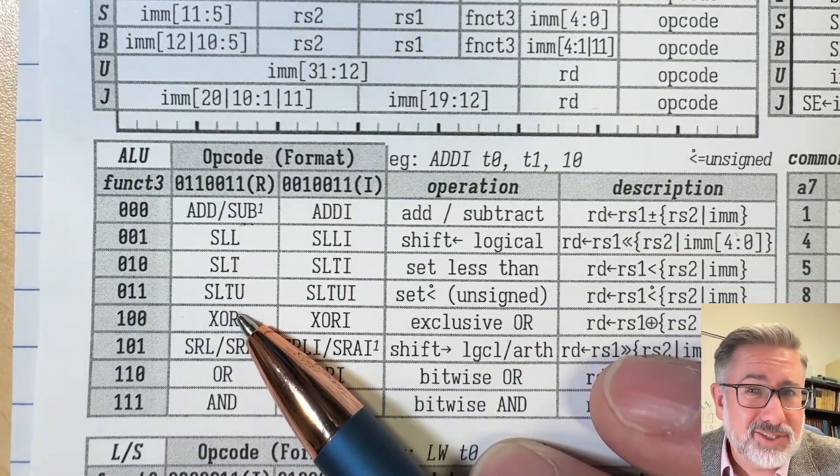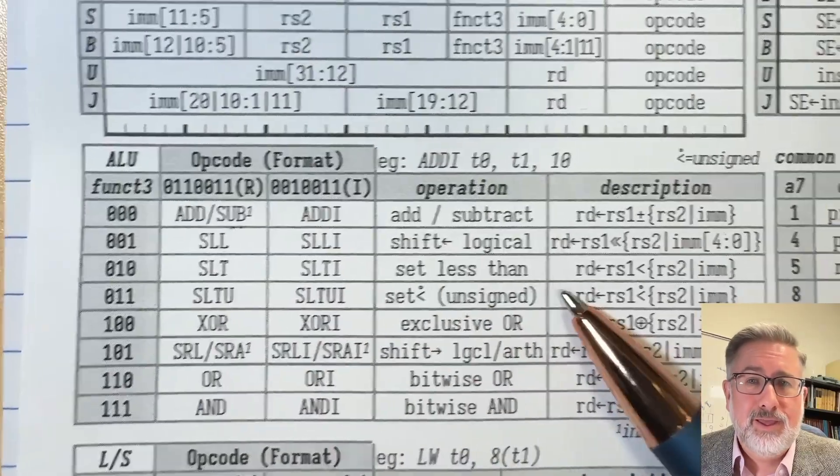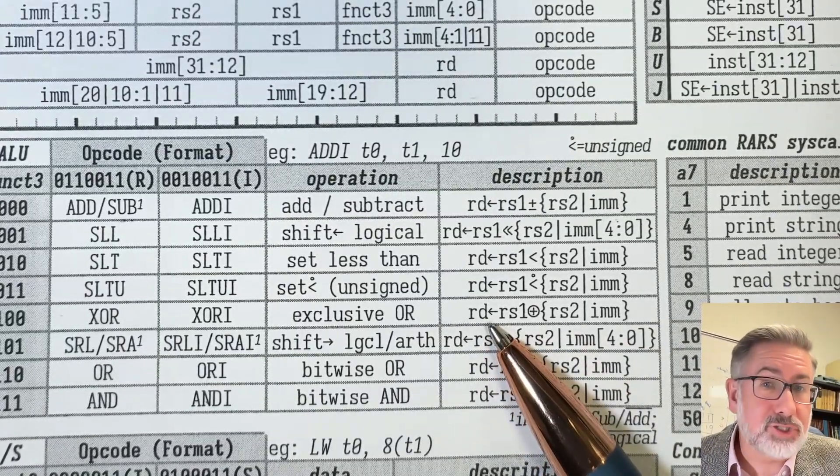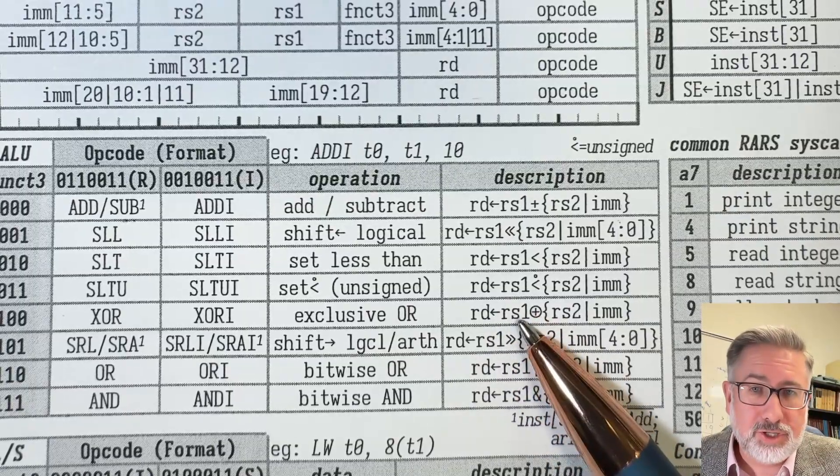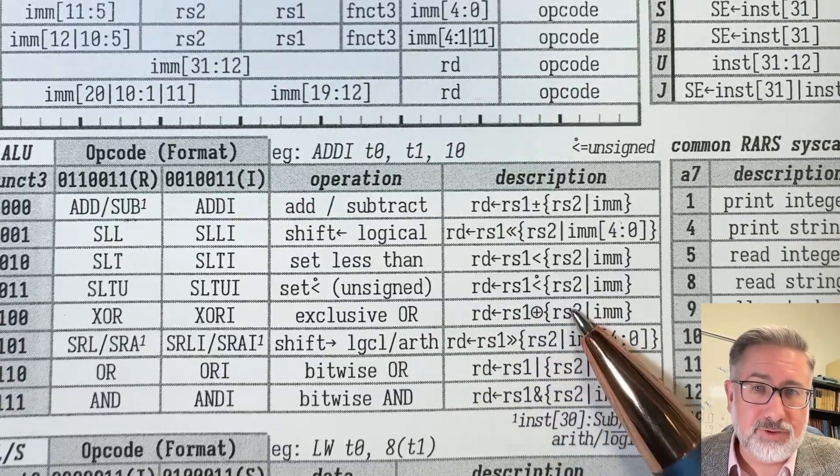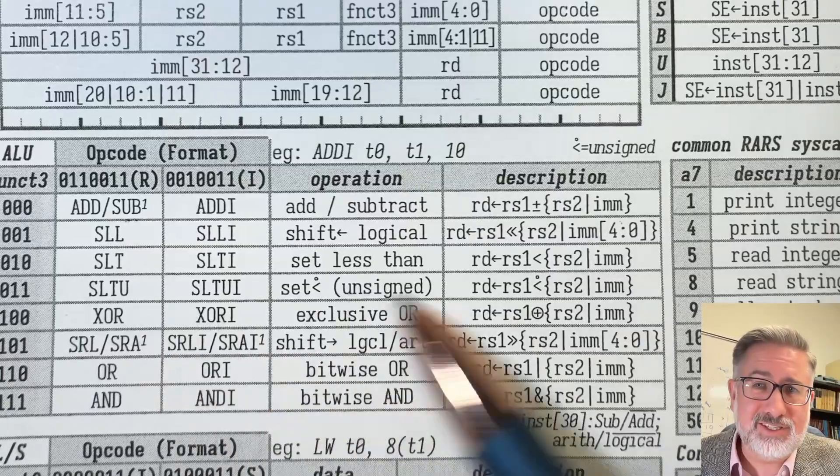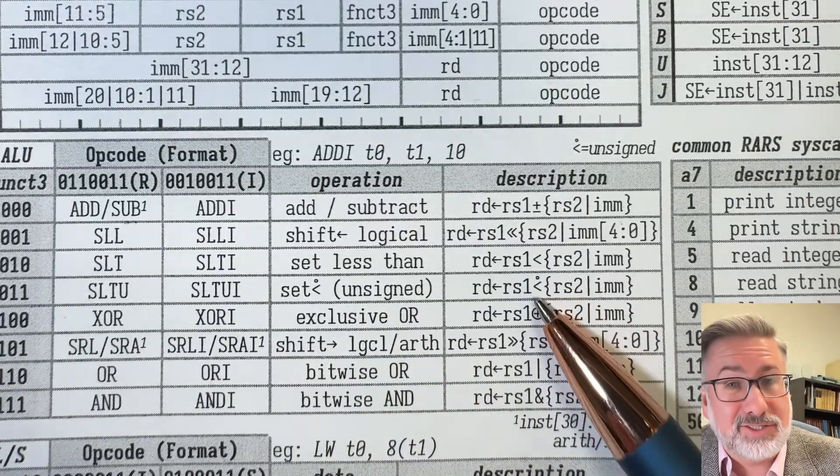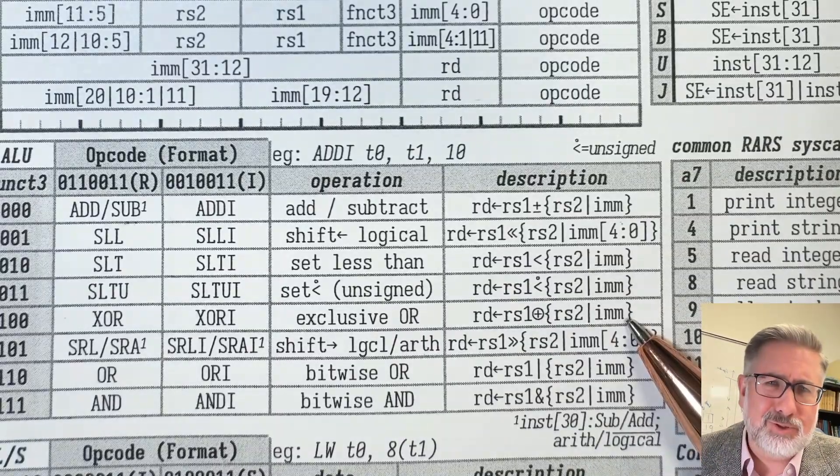We don't need those seven bits to specify an exclusive or. And then the table here tells us that the destination register is going to receive whatever value is calculated from one of the sources, exclusive or, with the other source. And here I've got this in this table that shows that immediate values or immediate versions of this can be done as well. And again, we'll talk about those in another video.